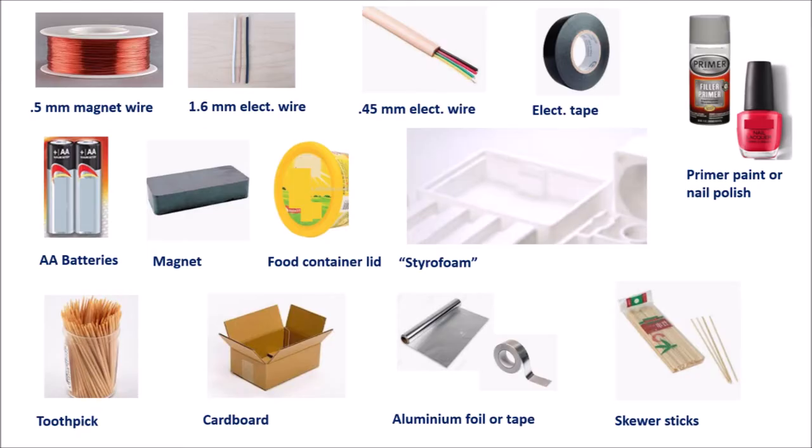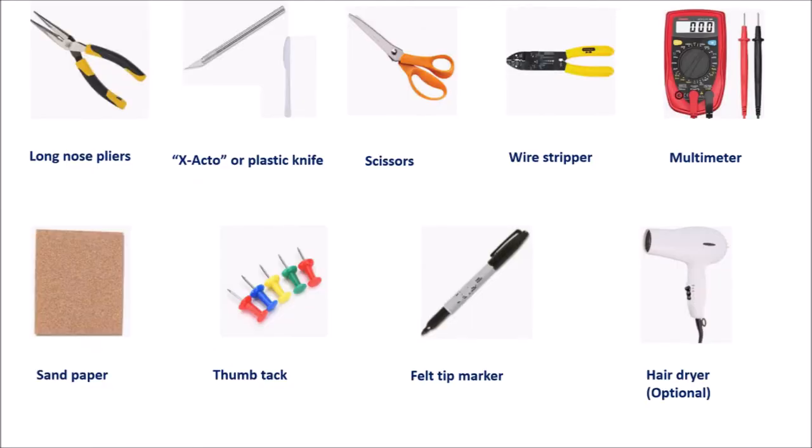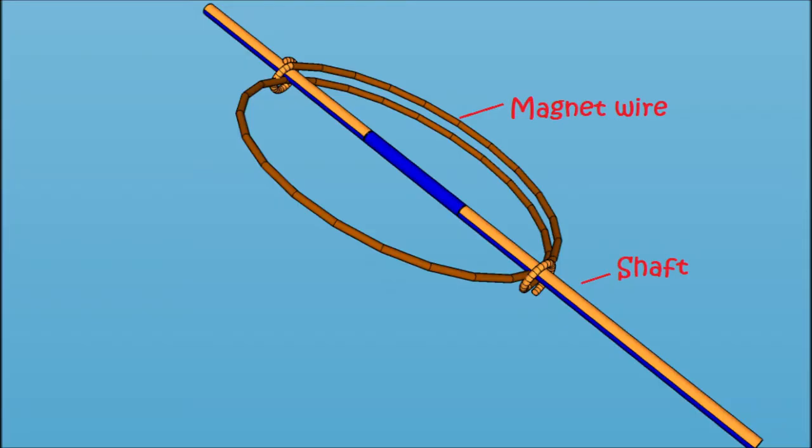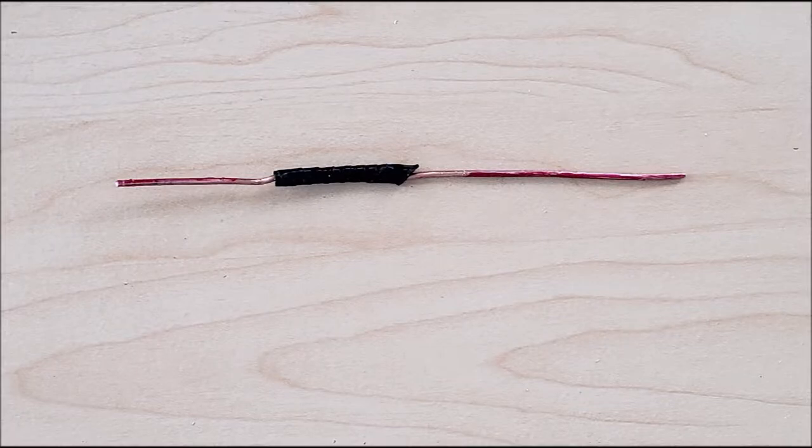We will need these materials and these tools. Let's start with a coil. To make the shaft, first cut about 10 centimeters of electrical tape into strips.